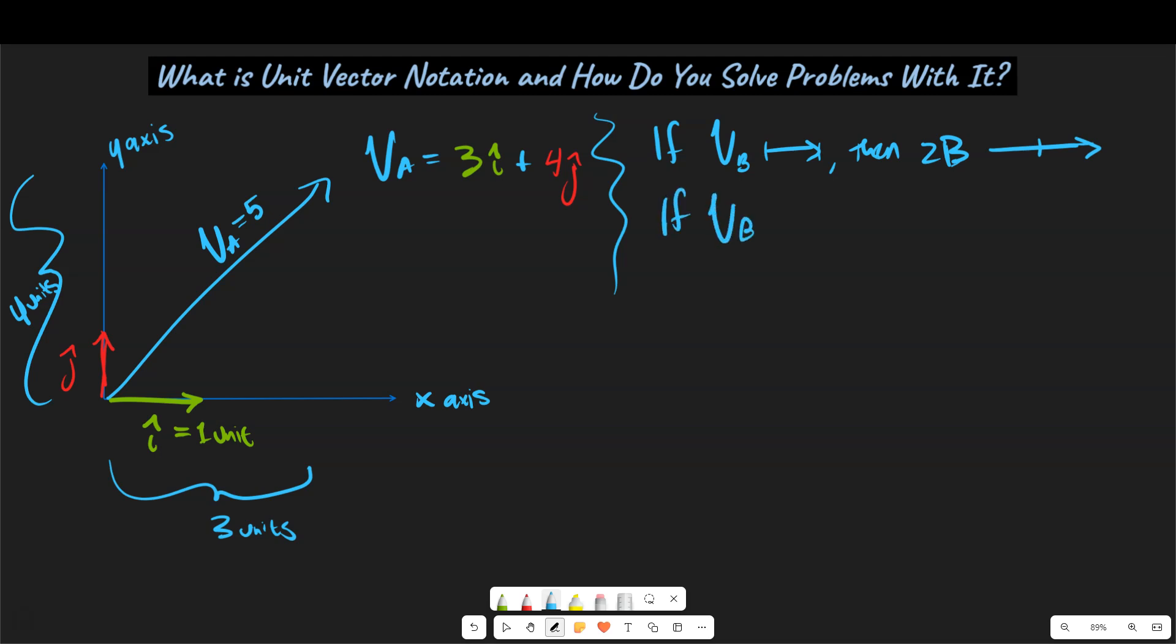We could say if vb is equal to what it was equal to before, then we could say negative b would be equal to this. So a negative sign will simply reverse the direction of the vector while keeping the same magnitude. What if I wanted to get another vector here? Let's call this vector c. Let's call this minus 2i hat plus 2j hat here. And so if these things are true, if these are our definitions of these vectors,